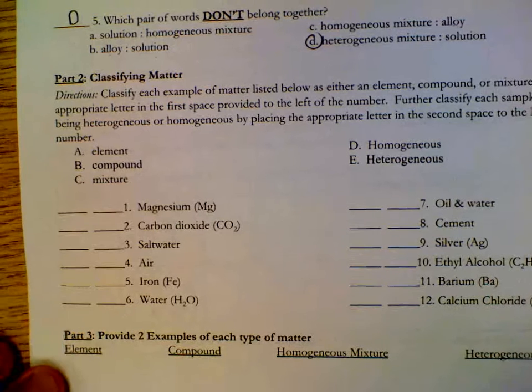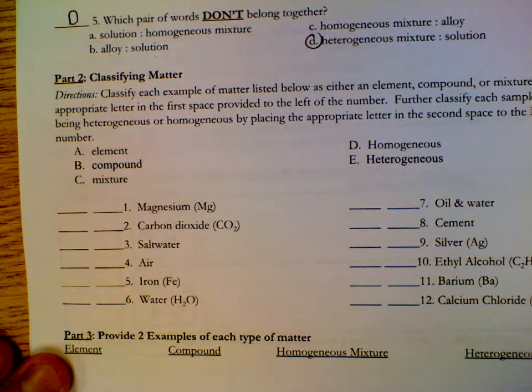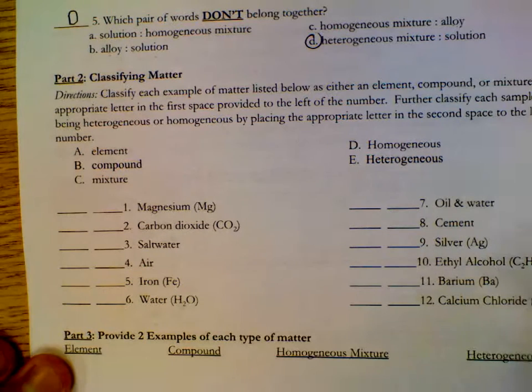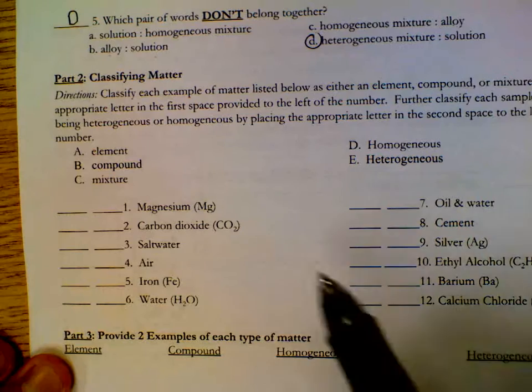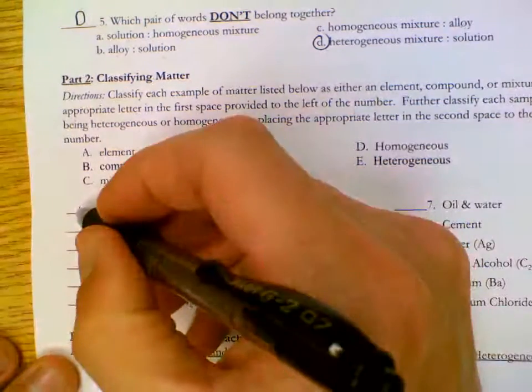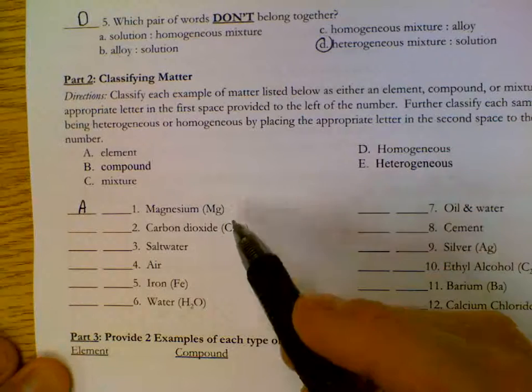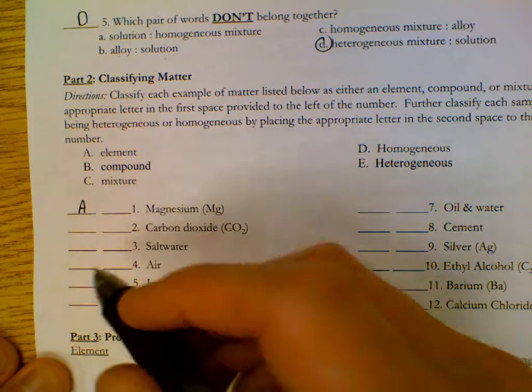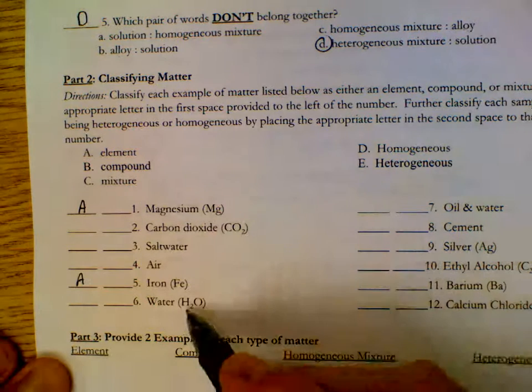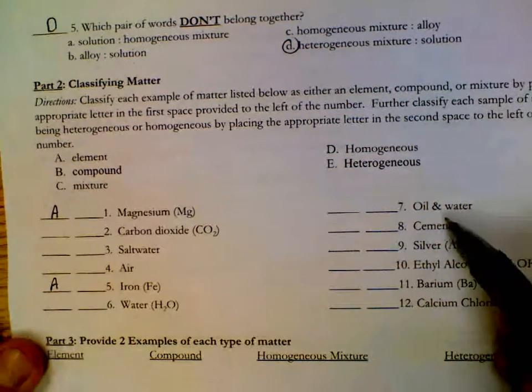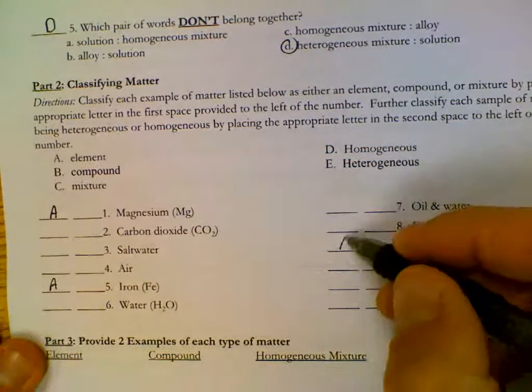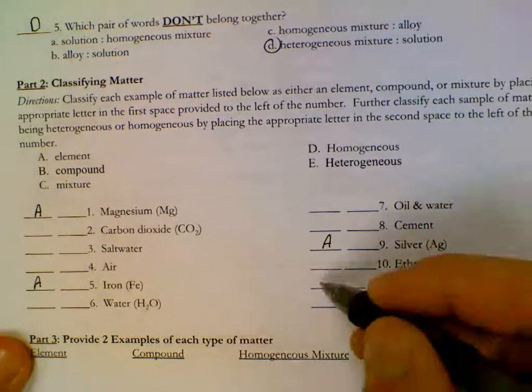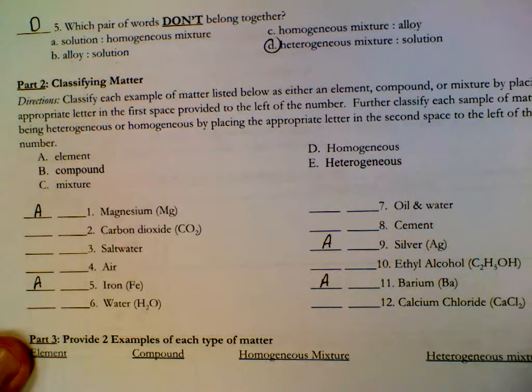Classifying matter. The easiest way to do this is to do one of these words and then go all the way through and choose all the ones that are elements. Magnesium is an element because it only has one symbol. You could find it on the periodic table. CO2, not an element. Salt water, not an element. Air, not an element. Iron, one symbol. So, that's an element. H2O has two symbols. Oil, water, cement. Silver has only one symbol. Ethyl alcohol has a string of symbols. Barium has only one symbol. Calcium chloride has multiple symbols.